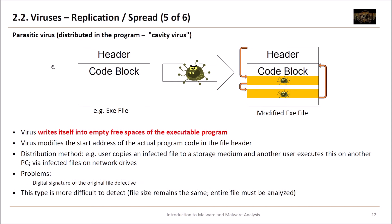The most interesting part of the parasitic virus is the cavity virus — distributed inside the program. The code block has empty blocks that are just null, and the virus writes itself into those empty parts. The virus then modifies the start address, jumping through the virus parts and then back to the original code block. The digital signature is still defective, but this type of virus is more difficult to detect since the file size remains the same — the entire file must be analyzed to see the difference.